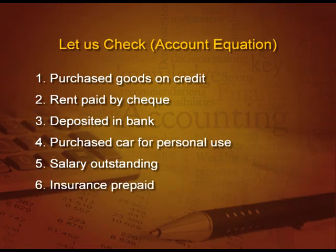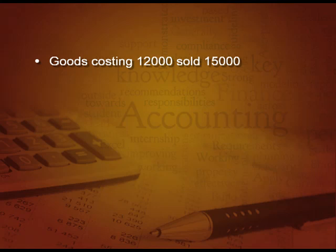Similarly, insurance prepaid: we have paid more insurance so cash is going out, but insurance prepaid is an asset for us because next time we do not have to pay that amount. So one asset (cash) decreases and another asset (insurance prepaid) increases. Next, goods costing 12,000 sold for 15,000: goods reduce by 12,000, cash increases by 15,000, and 3,000 profit increases our capital.